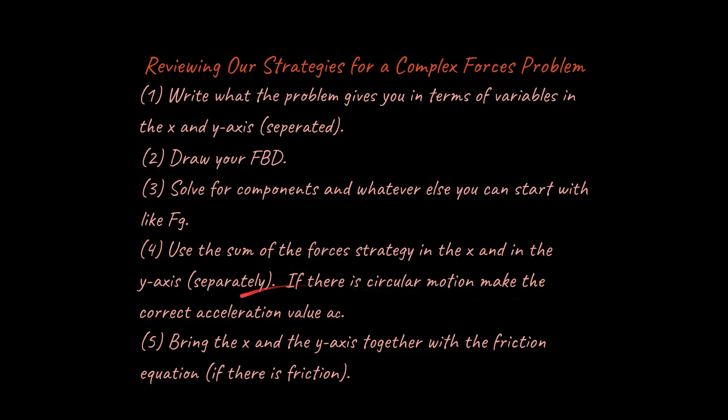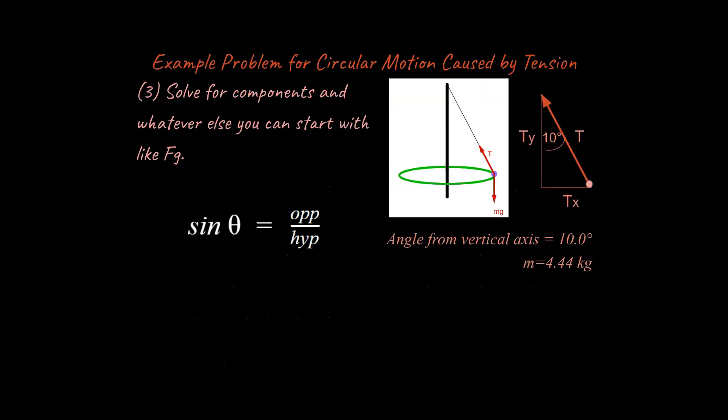We're going to use the sum of the forces in the x and the y-axis. And if there is circular motion, we're going to make the correct acceleration value, centripetal acceleration. And lastly, if there is friction, we're going to bring the x and the y-axis together using the friction equation. That's what's special about the friction equation, is that it draws on the x and the y-axis. So we're now roughly in step three.